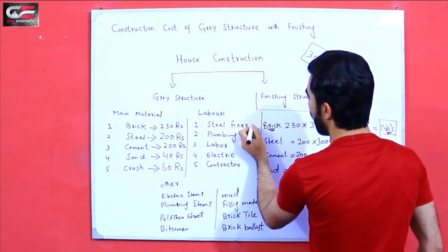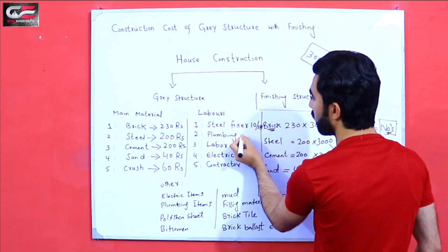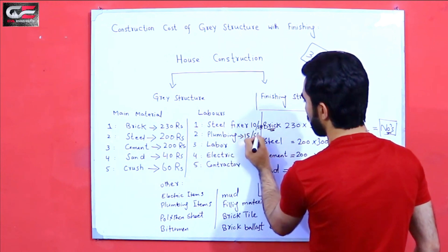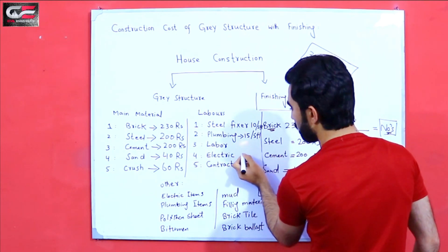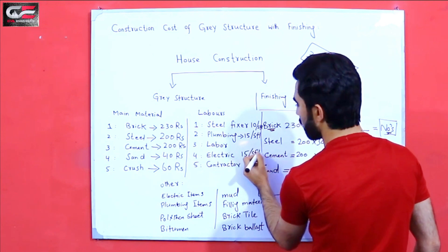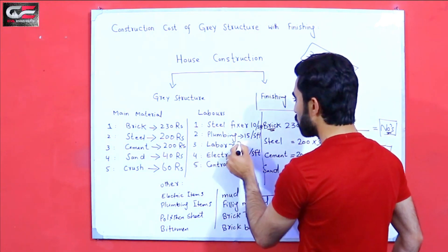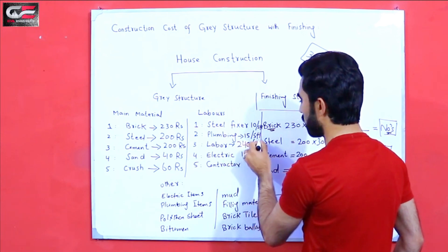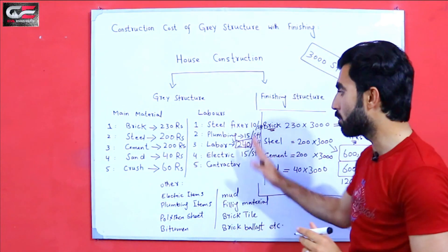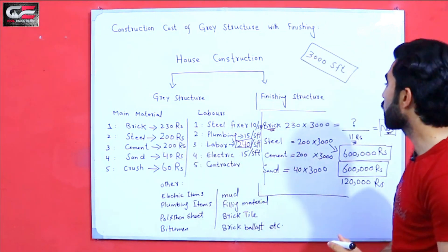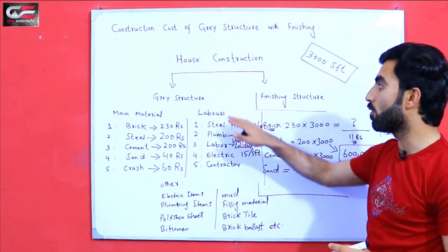Now for labor costs: I paid the steel fixer 10 rupees per square feet. For plumbing that was 15 rupees per square feet. For electrician, also 15 rupees per square feet. The general labor cost from start to finish was 240 rupees per square feet — that is just for labor, because the materials have already been discussed. So now you can easily find what the total cost of the project should be especially for gray structure.